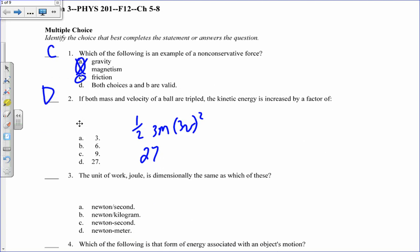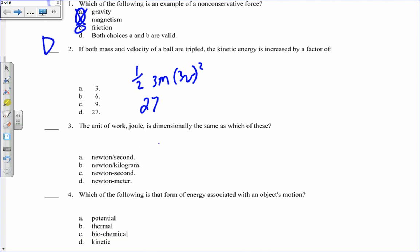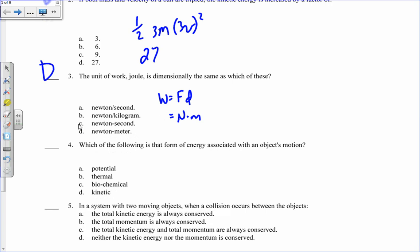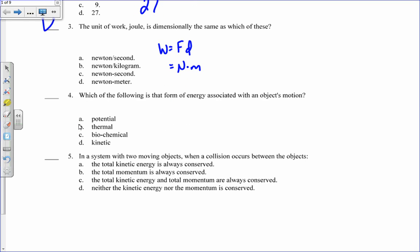The unit of work, joules, dimensionally, which is the same of these? Well, work equals force times displacement. That's newtons times meters. That's d. Which of the following is a form of energy associated with an object's motion? It would be kinetic energy.